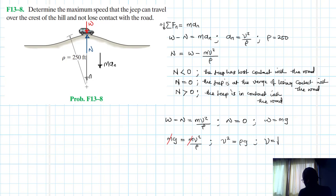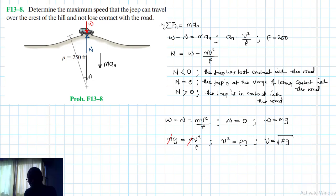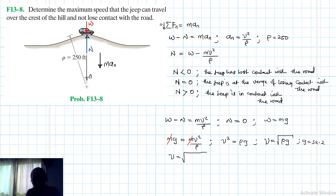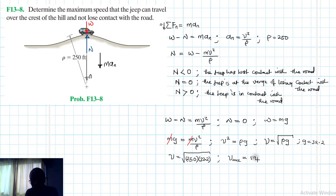Therefore v equals the square root of ρ·g. Since we are working in feet, g equals 32.2 ft/s². So v equals the square root of 250 times 32.2, which gives us a maximum speed of 89.72 feet per second.